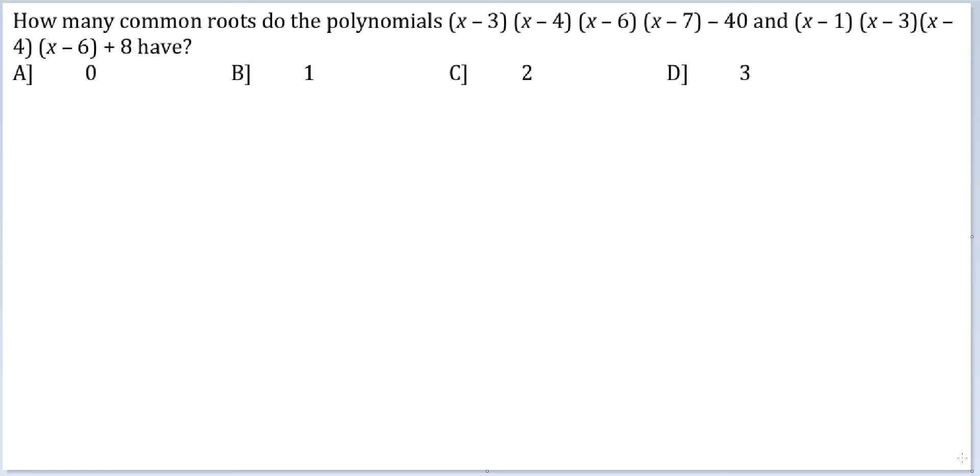One way would be to equate both these expressions and then solve. First you will get a bi-quadratic, you will cancel out the x raised power 4, then you will get a cubic and then solve that. Another way, I am sure that will not be the ideal way to solve here because the terms should be too large.